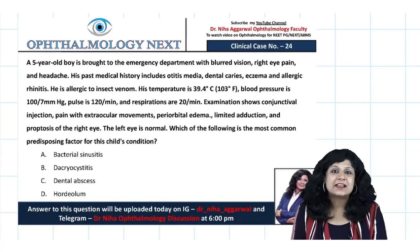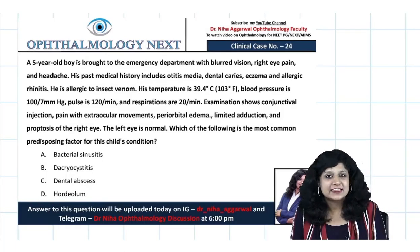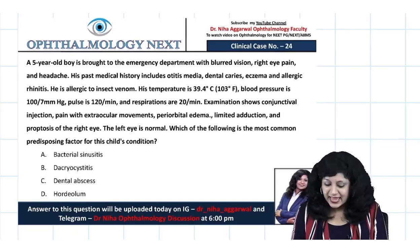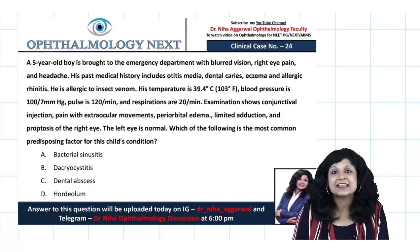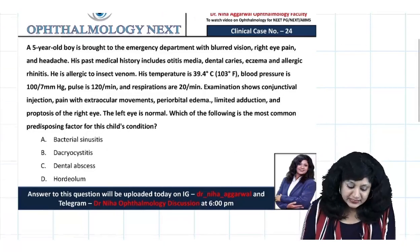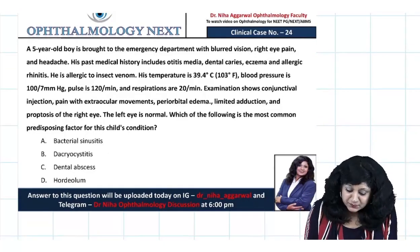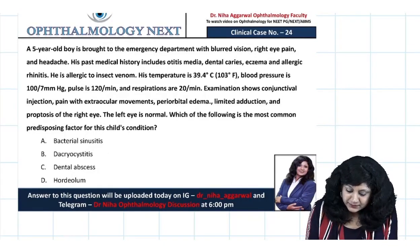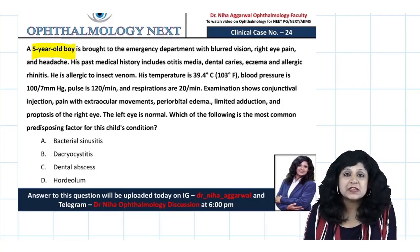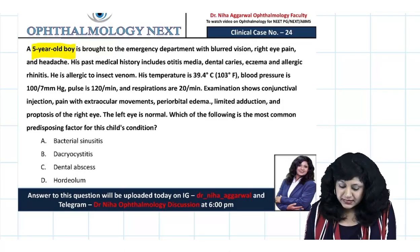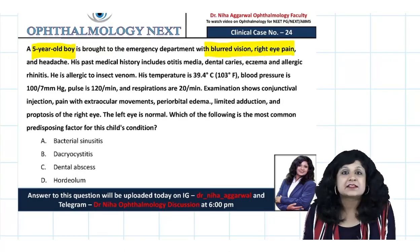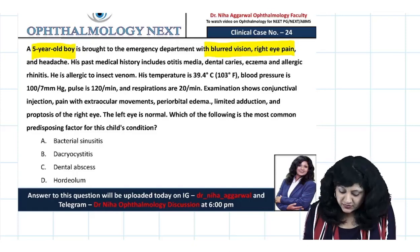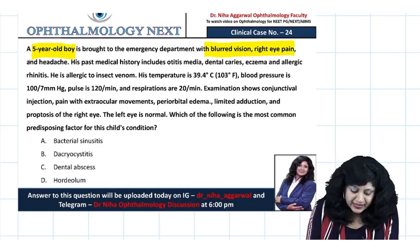Hello guys, welcome to the clinical scenarios and this is your case number 24. Now this is a very small boy, a 5-year-old boy who is brought to the emergency department with blurring of vision and there is pain in the right eye as well as headache.